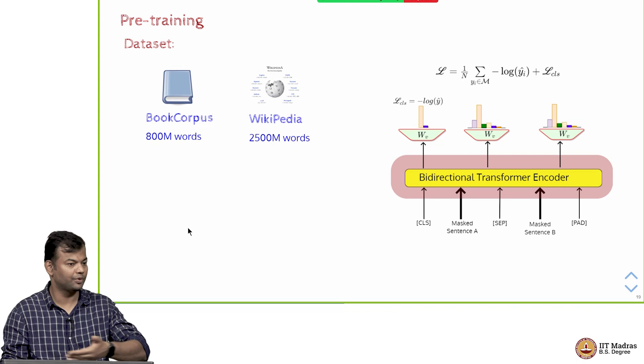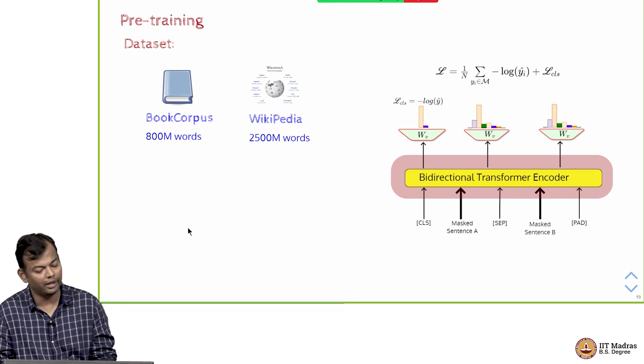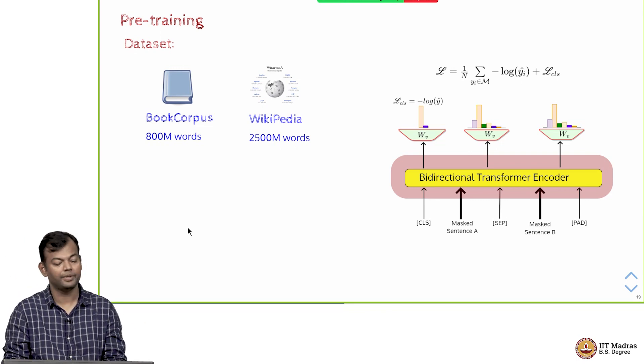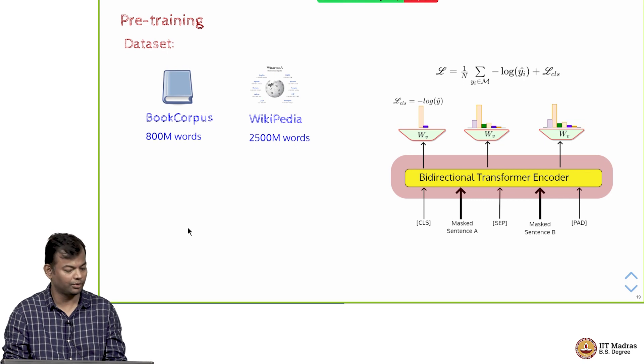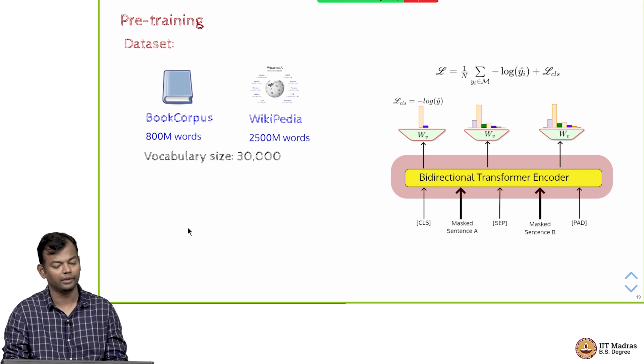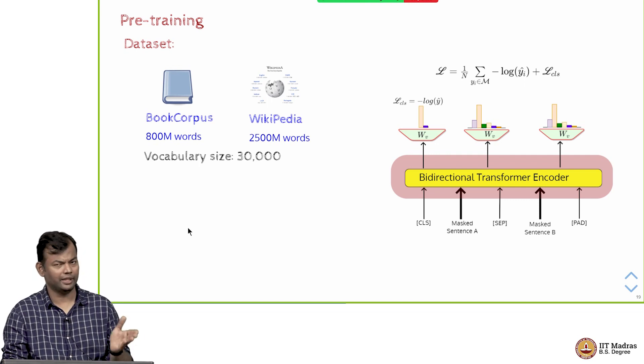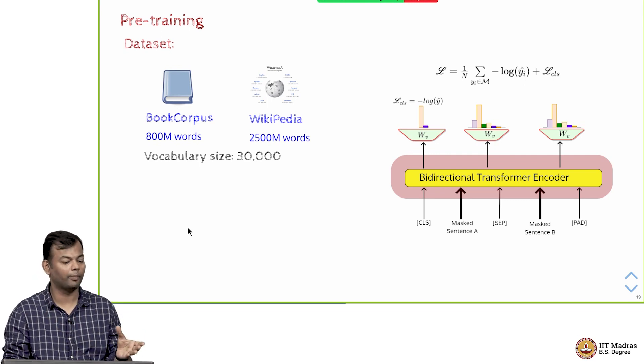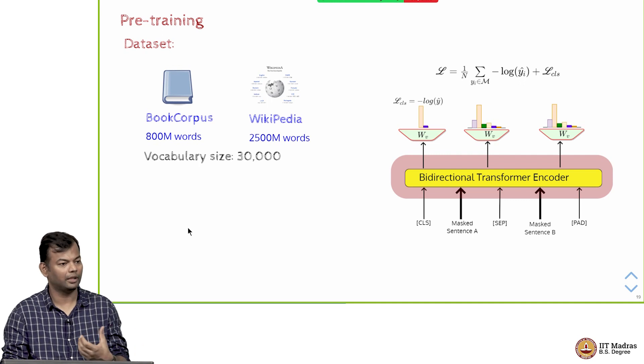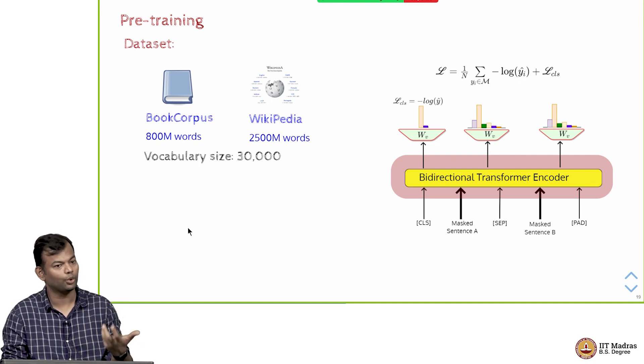So 800 million words in the book corpus and another 2,500 million or 2.5 billion words from Wikipedia. The vocabulary size was 30,000, and in the second half of this lecture we will talk about what does vocabulary mean, how do you get a vocabulary, what is a tokenizer, what are the different types of tokenizers and all that.